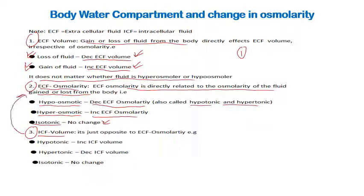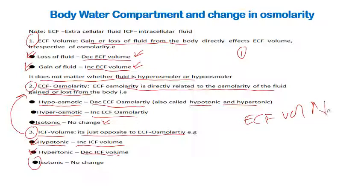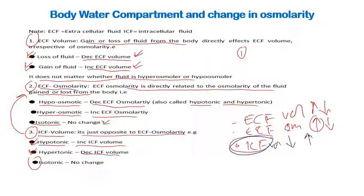ICF volume behaves opposite to ECF osmolarity. If ECF osmolarity increases (hypertonic fluid given), ICF volume decreases. If ECF osmolarity decreases (hypotonic fluid given), ICF volume increases. If isotonic fluid is given, there is no change in ICF volume. To summarize: ECF volume is directly proportional to fluid given or lost; ECF osmolarity changes in the same direction as the osmolarity of the fluid; and ICF volume is opposite to ECF osmolarity.